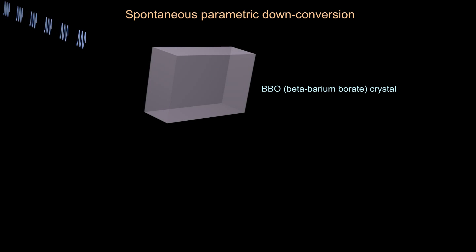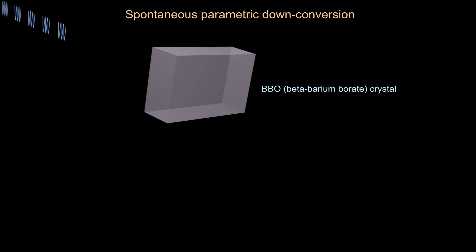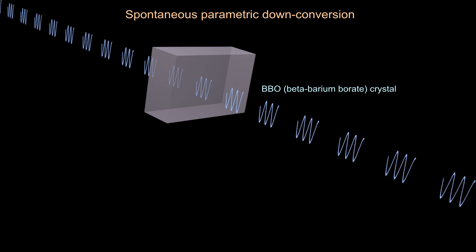Two photons are getting entangled sometime. Entangled photon can be created by one of the famous method called Spontaneous Parametric Down Conversion. The ultraviolet laser beam is shined into a beta barium borate crystal. Sometime, one photon is splitted into two photons and deflecting into different directions. These two photons are in entangled state.